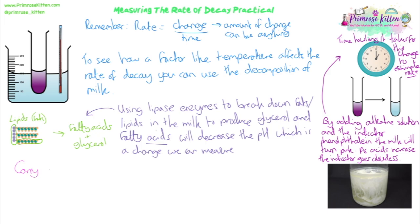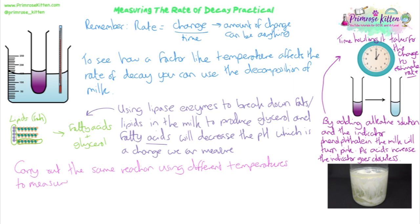We would just need to repeat the same reaction — milk plus an alkaline plus the indicator — and then do it at different temperatures to measure the effect on the rate. You can use water baths to control the temperature to improve it rather than using beakers. You can also use a pH meter instead of the indicator, to continuously record the pH change and get a number, say how long it takes to reach pH 2.